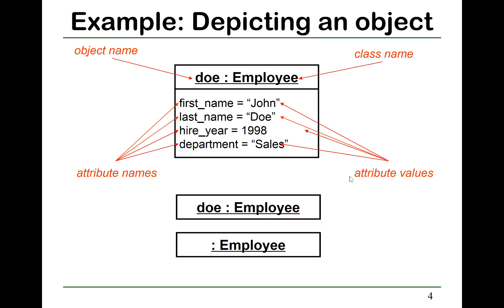For example, for this employee object, this is the object name, this is the class name, these are the attribute names, and these are the attribute values. And again, in some contexts, you may elide the attribute value box, and sometimes you may even elide the object name.